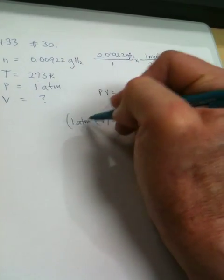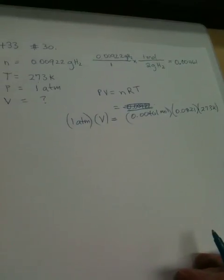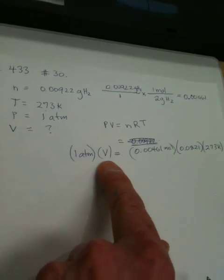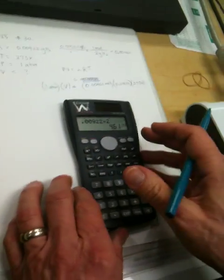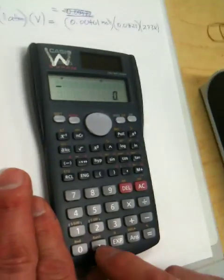1 atmosphere is lovely because it makes calculations easy. Now, when we're solving for V, we can just multiply these guys together, and since they're going to be multiplied by 1, it won't change that number at all.